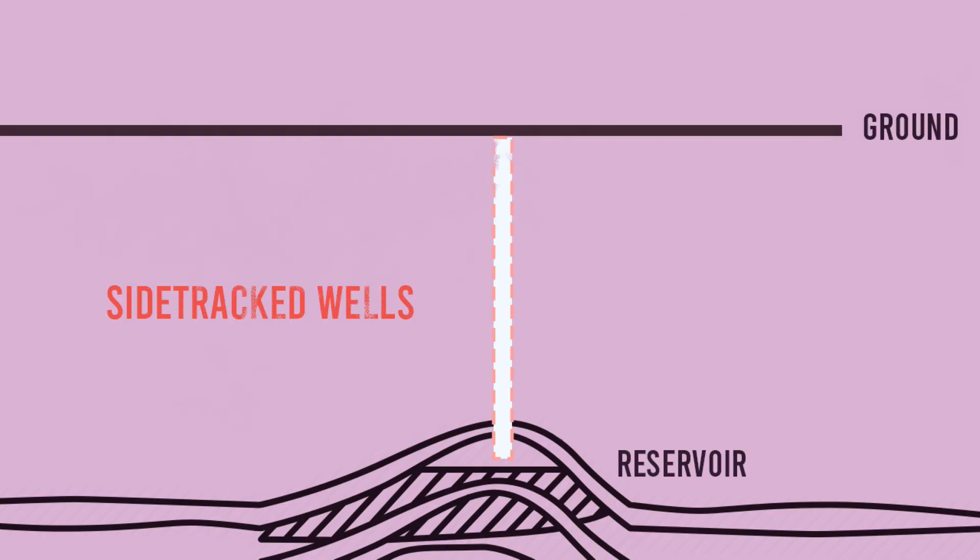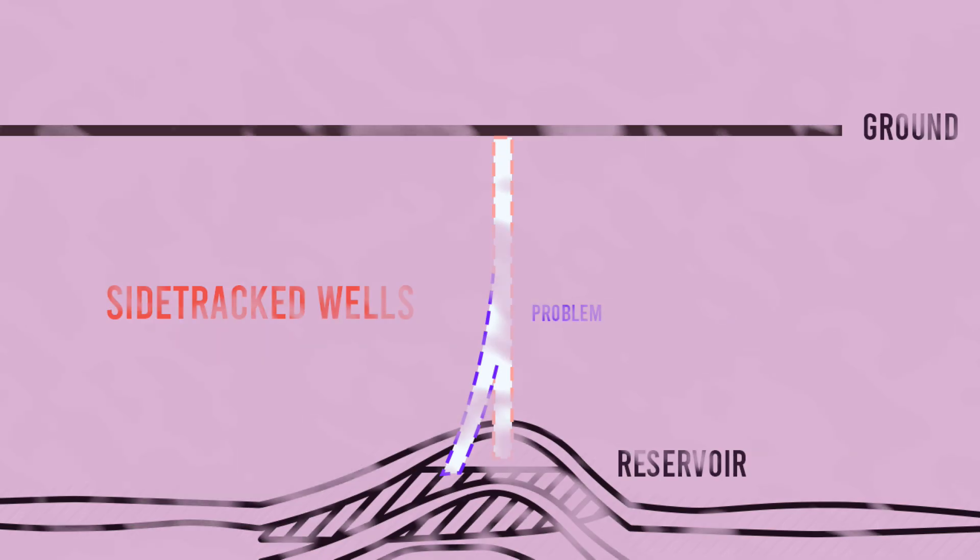Lastly, let's talk about sidetracked wells. Sometimes things don't go as planned. Maybe there is an issue like a stuck pipe, or we need to access a different part of the reservoir. That's when we drill a secondary wellbore off the original, known as a sidetrack, to bypass the problem or hit a new target.